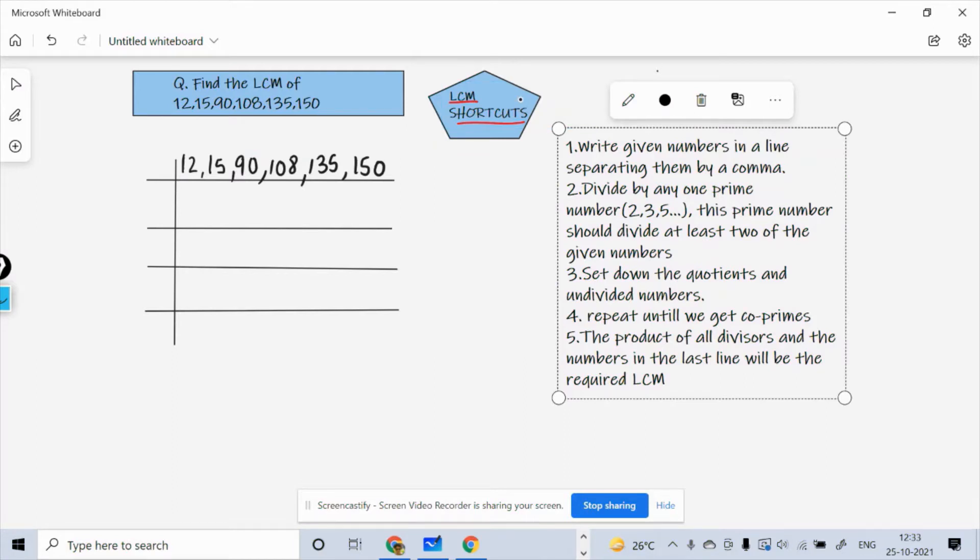Then we start thinking of a prime number. You know what are prime numbers: two, three, five, like I've written over here. We have to think of a prime number and that prime number should divide at least two of the given numbers here. So let's begin and see how we can apply this shortcut here and make this question very simple.